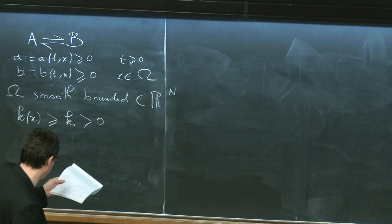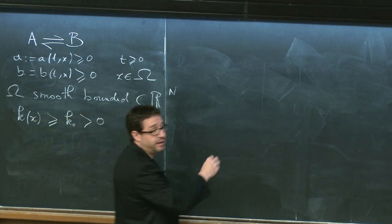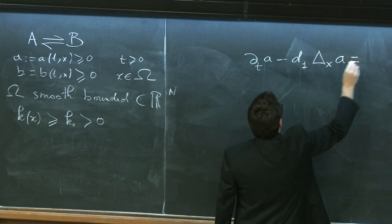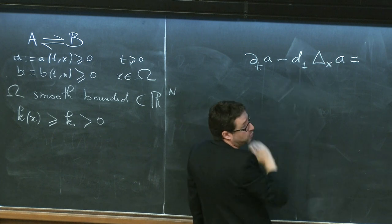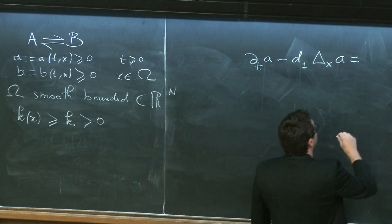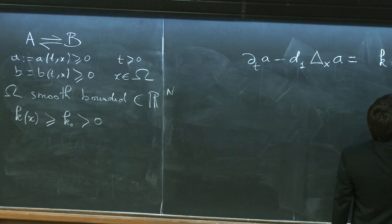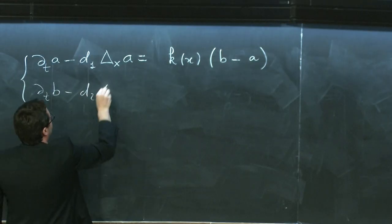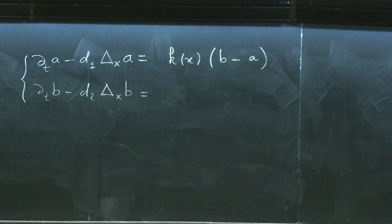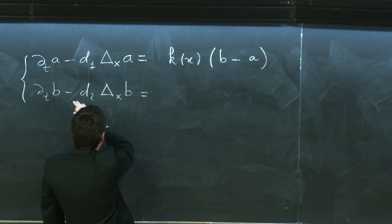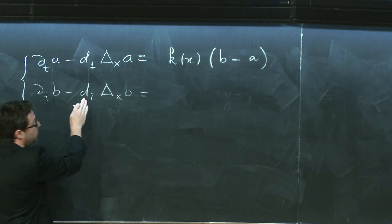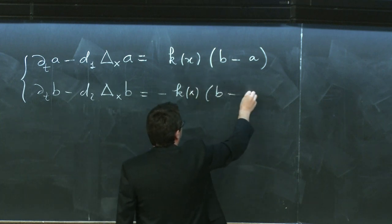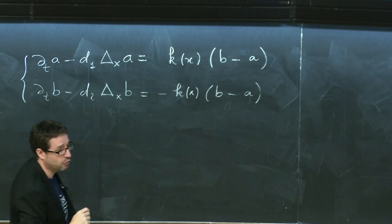The set of equations I wrote down is a system of two reaction-diffusion equations. The first equation concerns A with diffusion rate D1, and the reaction term is k(x) times (b minus a). For the second species b, it satisfies a reaction-diffusion equation with diffusion rate D2, and the reaction is the opposite of the first one.